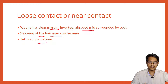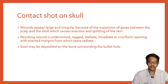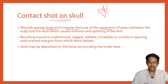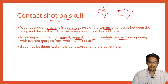Contact shot on the skull causes characteristic changes. The wound appears larger and irregular because of expansion of gases. The underlying bone causes the skin to escape from the wound, and it may become stellate or irregular. The margins show aversion and splitting of the skin, resulting in an undermined, stellate, tri-radiate, or cruciform wound, differing based on how the gases escape.